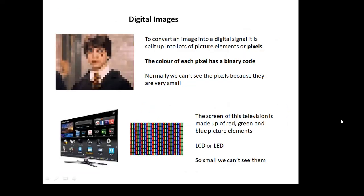Digital images - how do you change a picture into digital? What you do is split the picture up into lots of picture elements or pixels. And then the color of each pixel has a binary code. Normally, we can't see pixels because they're very small. The idea is that they are so small that you can't see individual pixels. If they were too big, then the image would look pixelated. The screen of a television is made up of red, green and blue picture elements. It might be LCD or light emitting diodes. But basically, they're so small that we can't see them. We just see the overall picture.